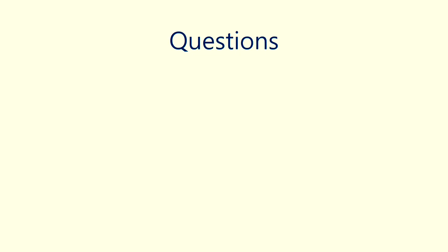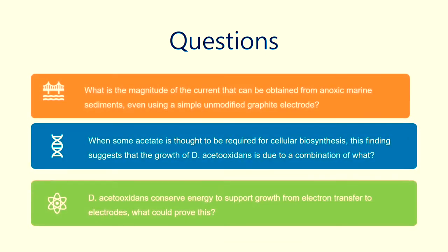In the end, I want to ask three questions about this article. What is the magnitude of the current that can be obtained from anoxic marine sediments, even using a simple unmodified graphite electrode? When some acetate is thought to be required for cellular biosynthesis, this finding suggests that the growth of D. acetoxidants is due to a combination of what?